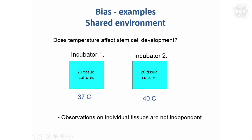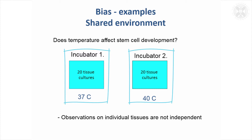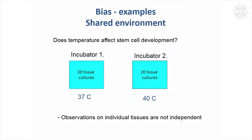This doesn't just apply to animals. If you're studying whether temperature affects cell development — and there's a big study looking at Roslyn freezers at the moment seeing how cold they need to be — consider an incubator example: you've got two incubators at different temperatures with quite a large sample of tissue cultures in each. It could be that the incubators are operating under different conditions, so the individual tissues are not independent. Ideally, you'd sample from different incubators to avoid the possibility that results are due to other factors about the incubators.